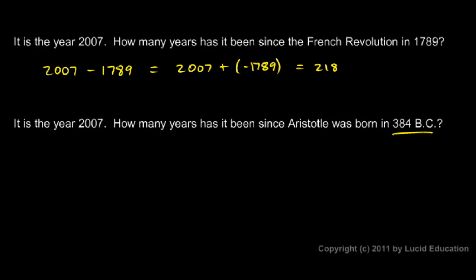So 384 BC, that could be represented as a negative number, negative 384. You can think of the timeline of history as being like a number line.